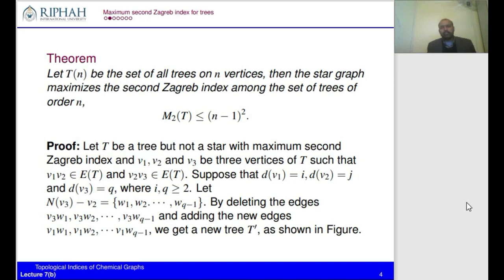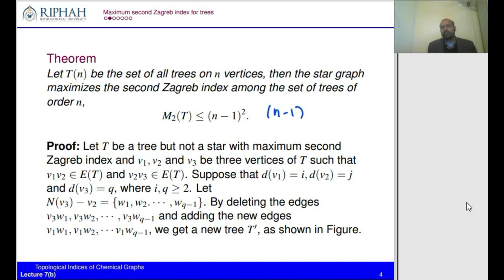One can notice that the second Zagreb index of a star graph on n vertices equals (n−1)². This is because there are n−1 edges in the tree. By applying the definition of the second Zagreb index, one end of each edge has degree n−1 and the other end is a pendant vertex with degree one, giving the expression (n−1)².